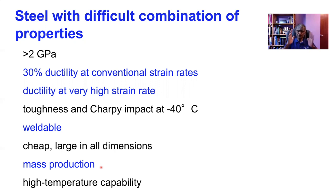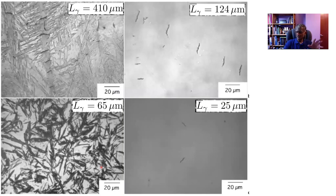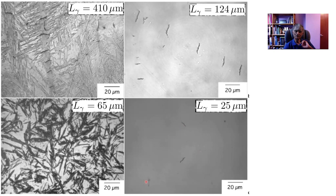Davies and Magee's work identified that if you make the length of martensite plate shorter, then the tendency for cracking is reduced. Subsequent work by Chatterjee at Tata Steel demonstrated this again — here we have the austenite grain size varying from 410 micrometers to 25 micrometers, and you can see that the tendency for cracking is dramatically reduced as we reduce the austenite grain size, in other words as we reduce the length of the plate.